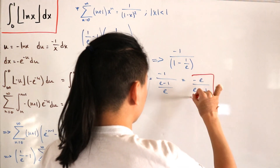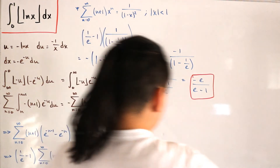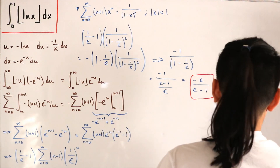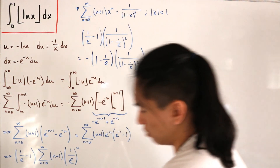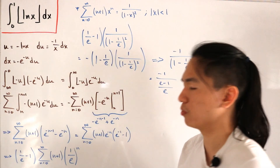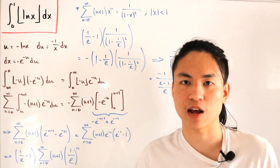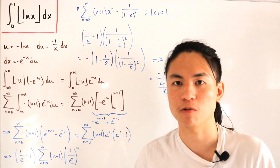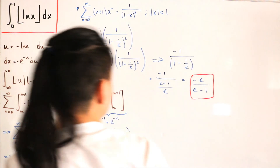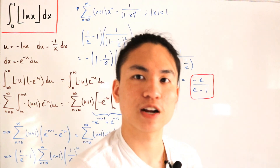And that's it — the computation is done. It utilizes that geometric series, for which the proof is already in a previous video linked in the description. So the answer is -e/(e-1), which is pretty cool.